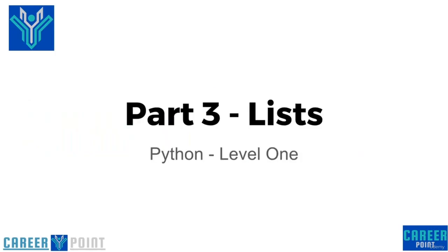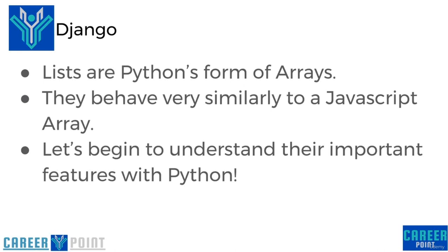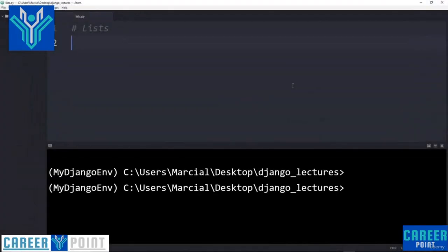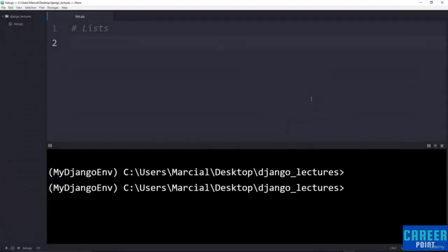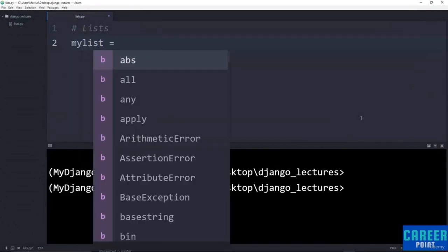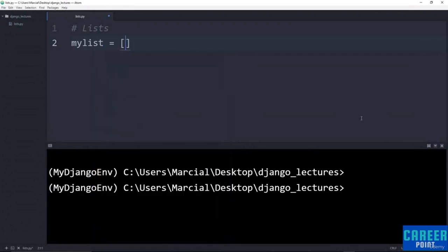Hello everyone and welcome to part three, where we're going to be discussing Python lists. Lists are Python's form of arrays and they behave very similarly to a JavaScript array. Let's begin by showing you how to create a list. Creating a list in Python is really simple — you type in whatever you want the variable to be, equals, and then use square brackets with every item in the list separated by a comma. For instance, here's a list of the numbers 1, 2, and 3.